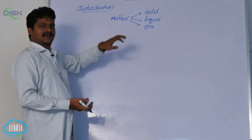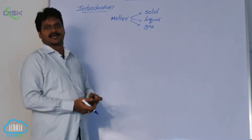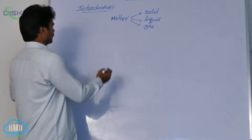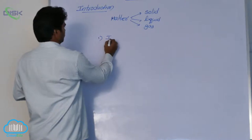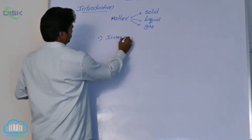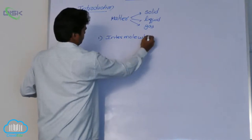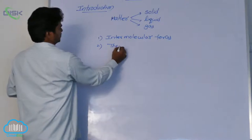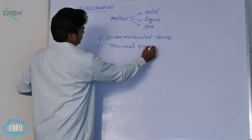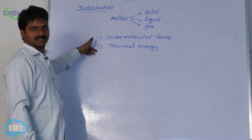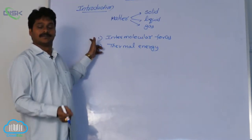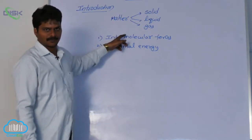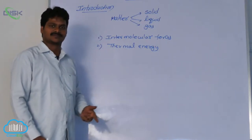The three states of matter are possible by the influence of two opposing forces. First one: intermolecular forces. Second one: thermal energy. These are the two forces that are responsible for the physical state of matter — one is intermolecular forces, the other is thermal energy. About these two forces and their influence, we discussed in first year.